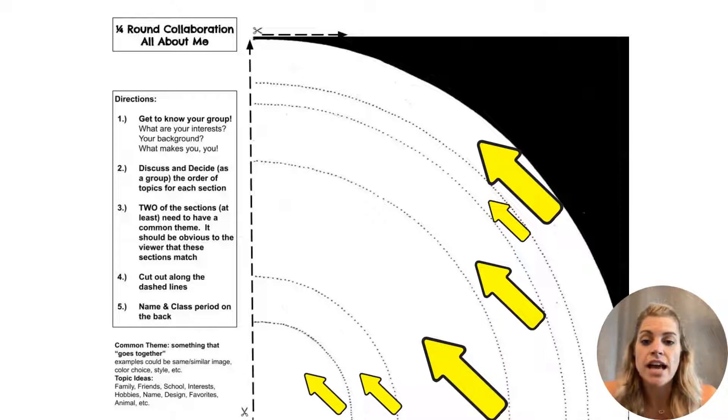Next, you're going to discuss and decide, as a group, the order of topics for each section. There are six different rainbow pieces or arches. So you're going to decide what order you want each topic to go in. Maybe that outermost rainbow piece is going to be something about your family, so everyone will have something about their family on that one. The next one, let's say you all decide is your name. You're all going to design your name, and so on and so forth. So everyone's order of topics should be the same.